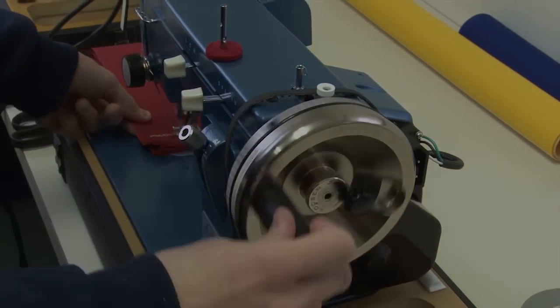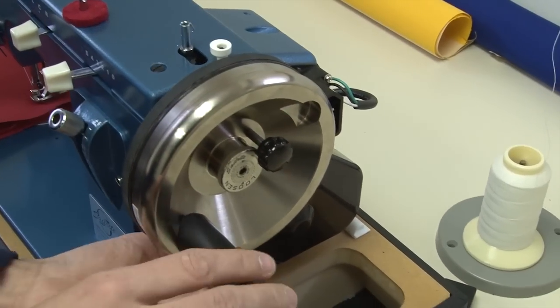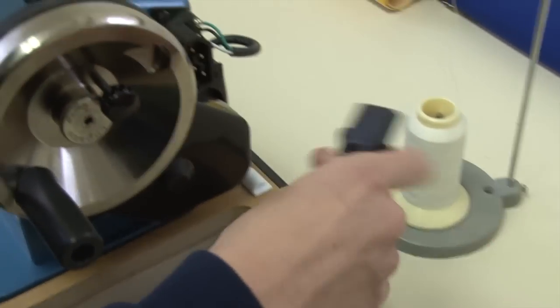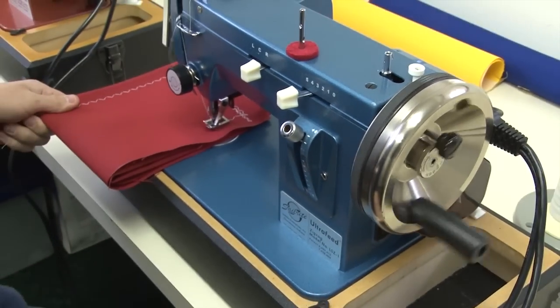When you're ready to sew under power, just slide that belt on as you would a bicycle chain. It's that easy. Then we'll take that electrical cord and plug it into the back housing above the motor. Now you're ready to sew under power.